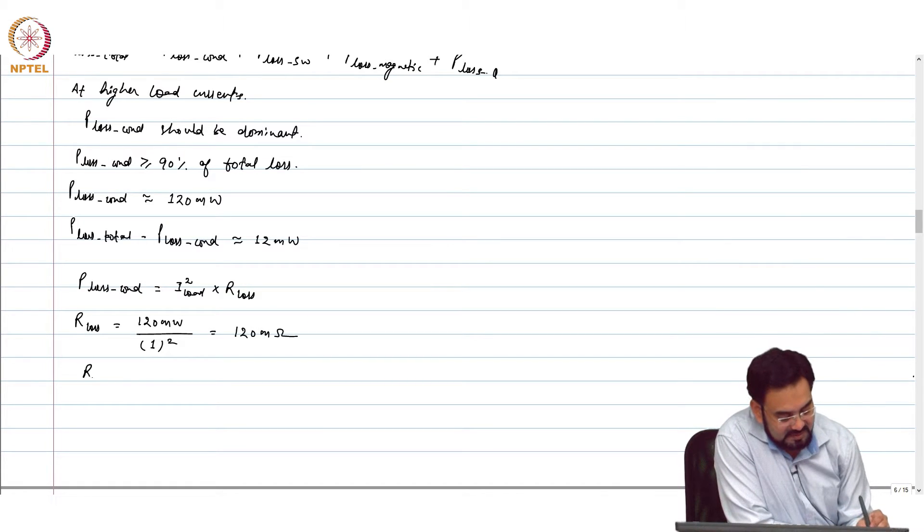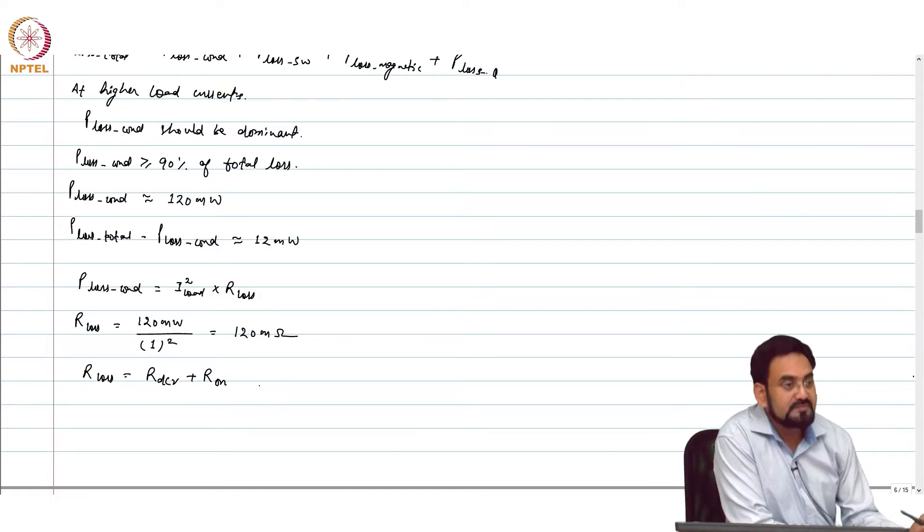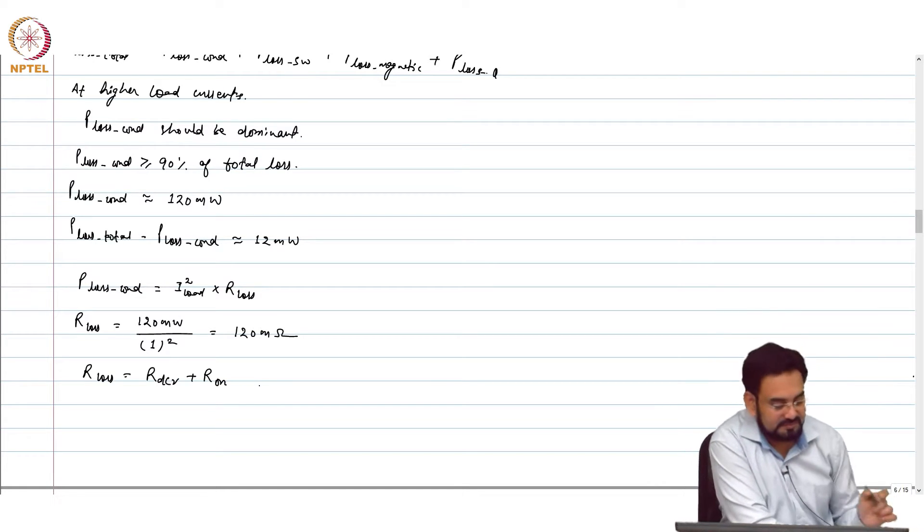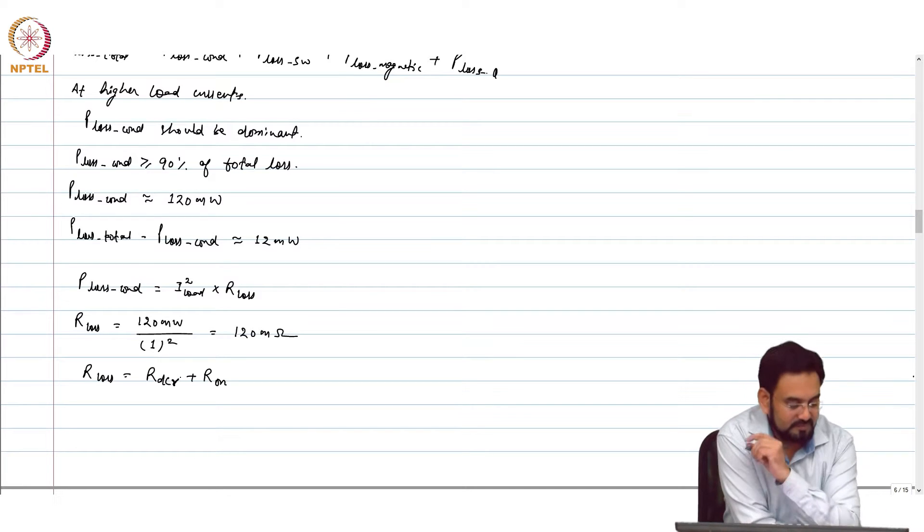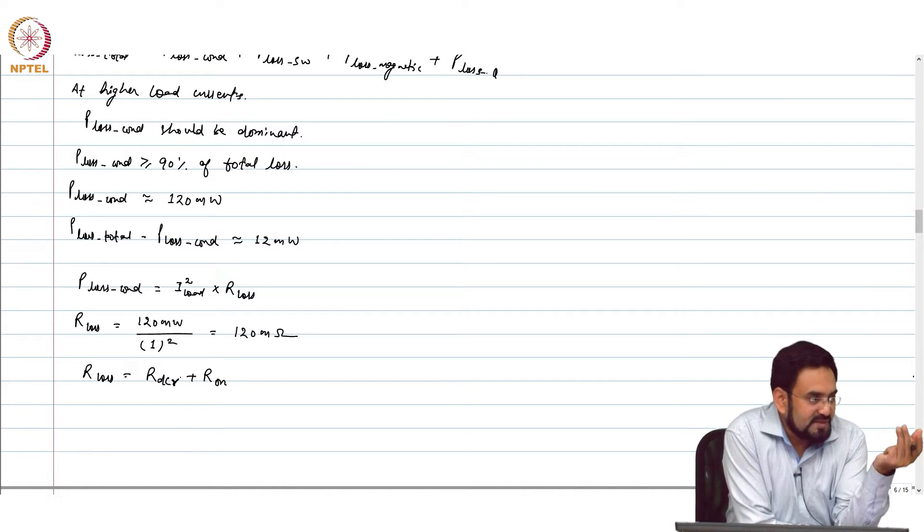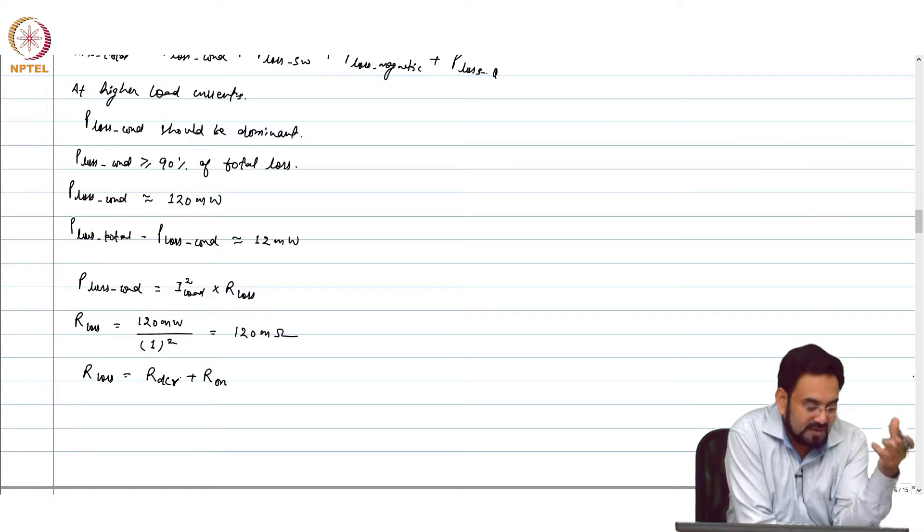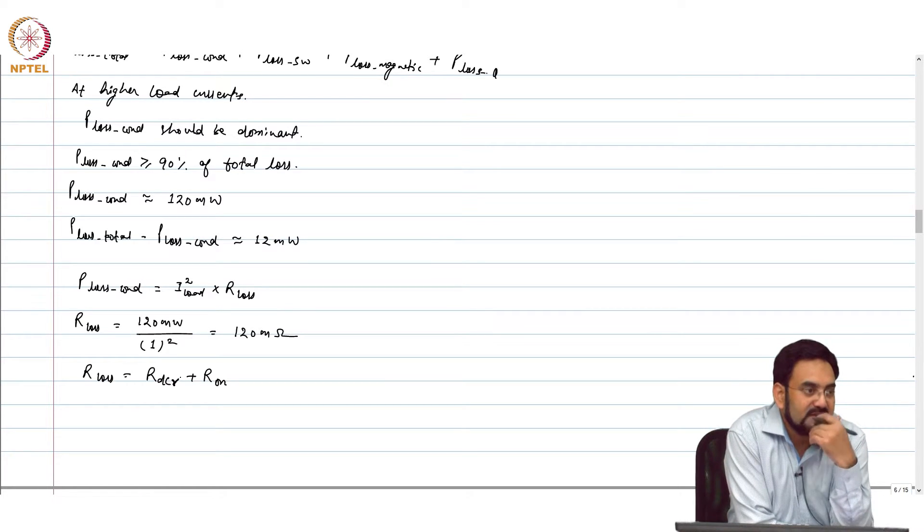And this R_loss is R_DCR plus R_on. So now you have two choices: either you reduce R_on and choose a bigger R_DCR, or the other way around. So what do you prefer? A smaller R_on or bigger R_on while keeping the same R_loss?